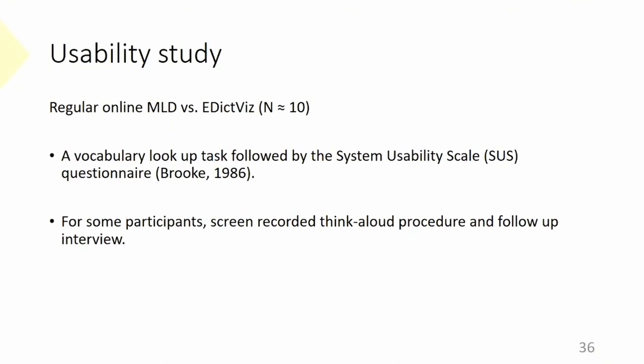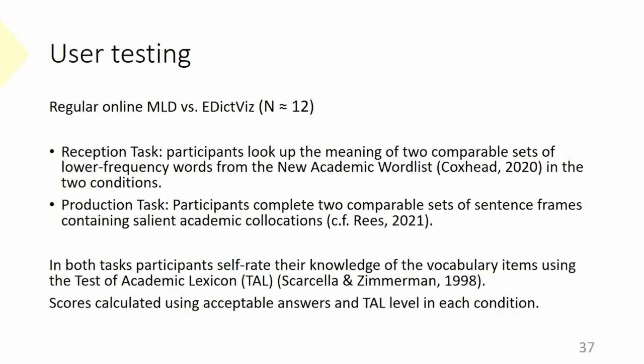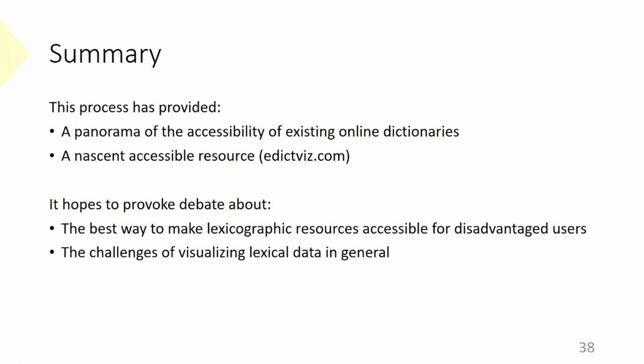For further evaluation, I want to do a usability study comparing edictviz with a regular online dictionary, using a standardized measure like the System Usability Scale, perhaps with screen recording and think-aloud protocols. I'd also like to see how this affects language performance — maybe a vocabulary game, probably focusing on academic vocabulary. So far the process has provided a panorama of the visual accessibility of existing online dictionaries and a nascent accessible resource in edictviz. But most importantly, I want to generate debate about the best way to make lexicographic resources accessible for disadvantaged users, and more generally, talk about the challenges of how to visualize lexical data.